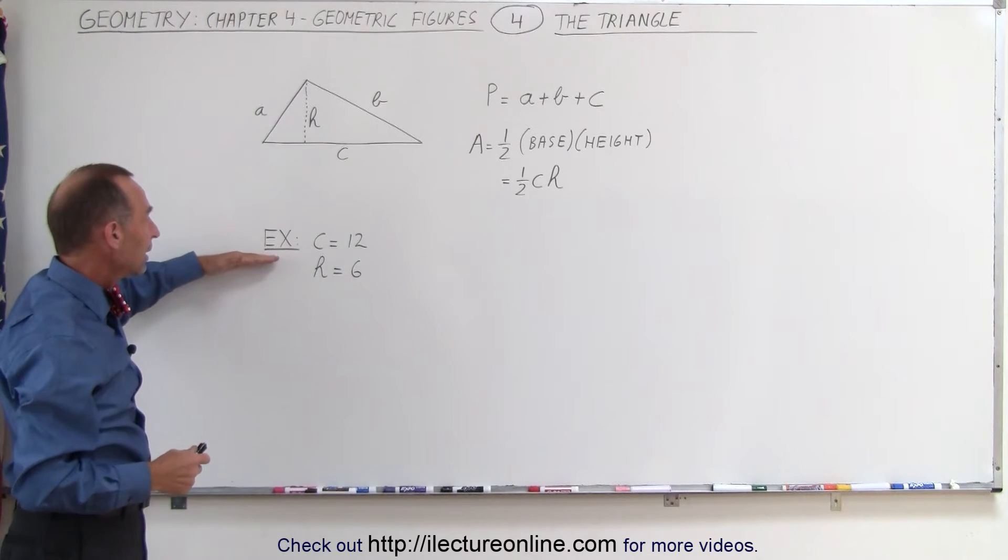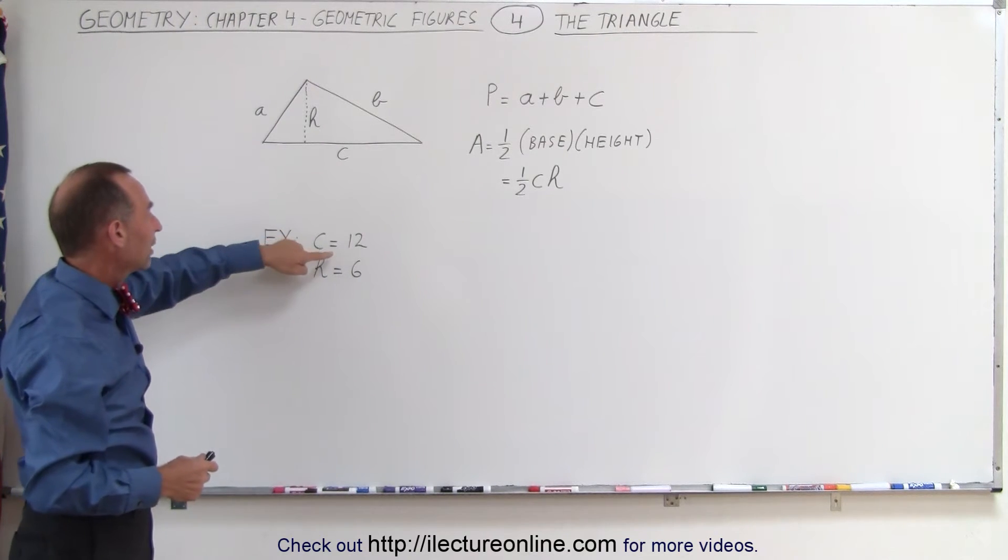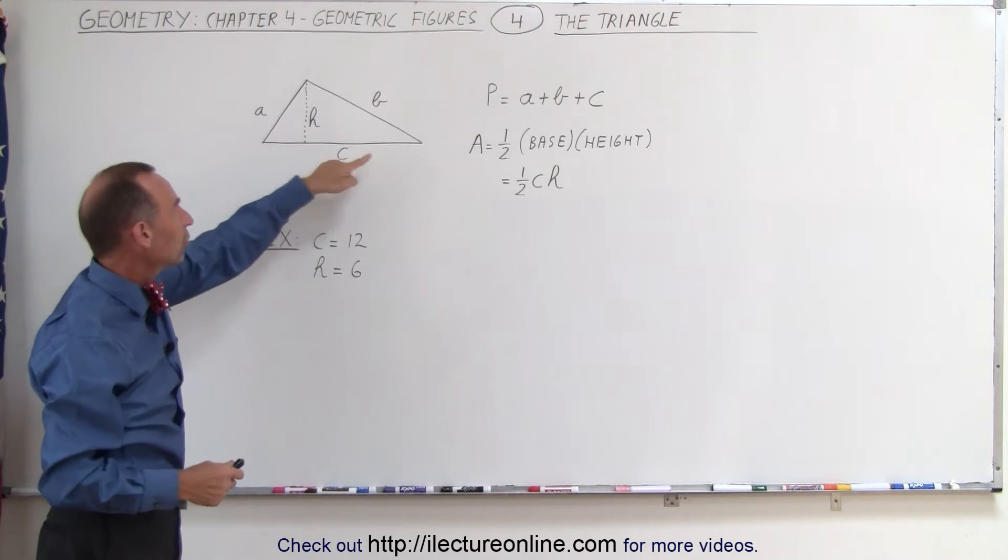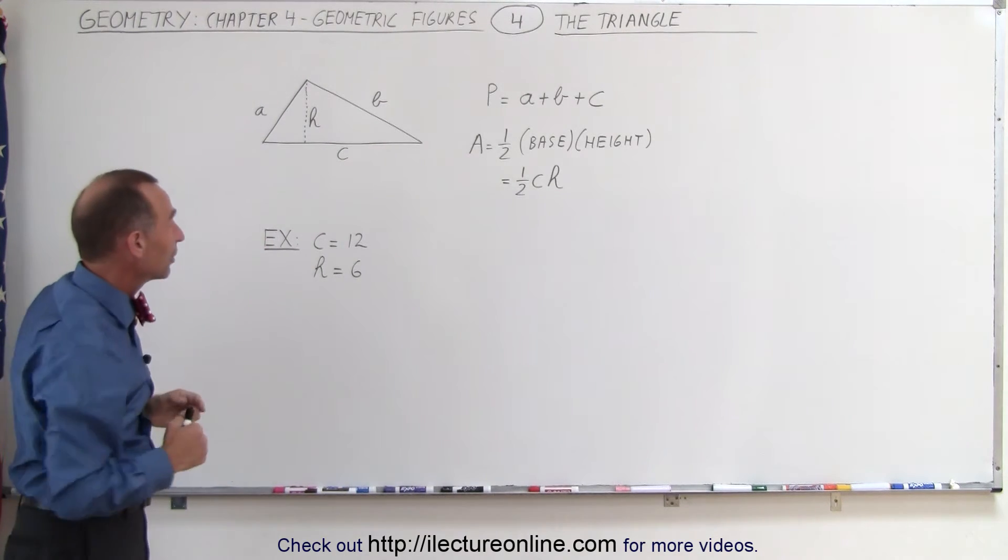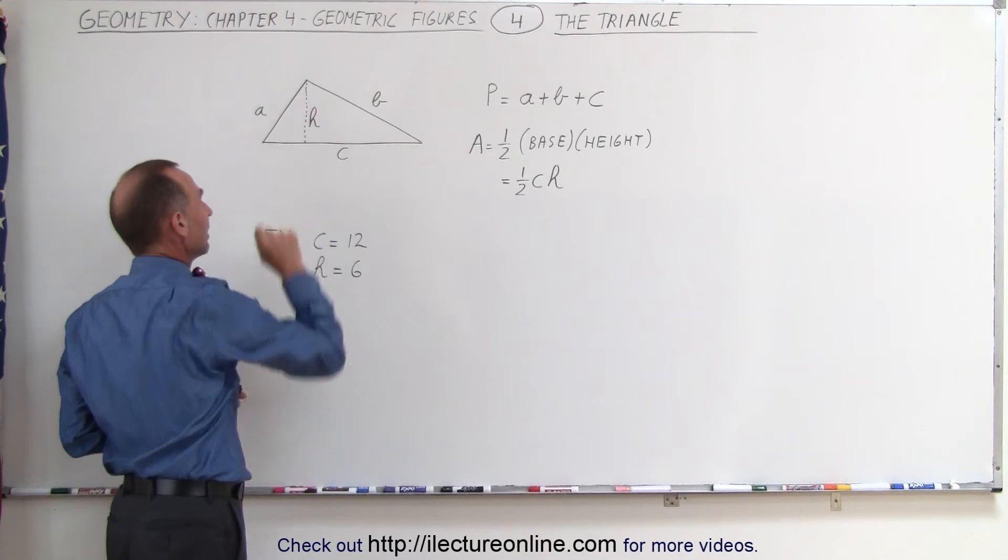As an example, here we have a triangle which we're given the length of the longest side, which we in this case call the base because it's the bottom of the triangle, and we're also given the height.